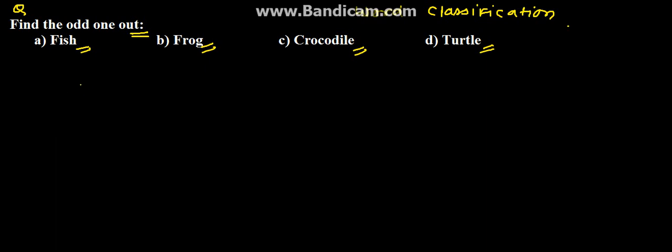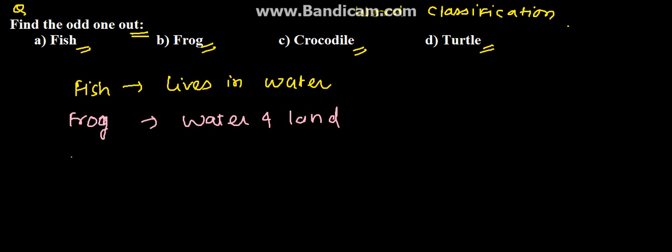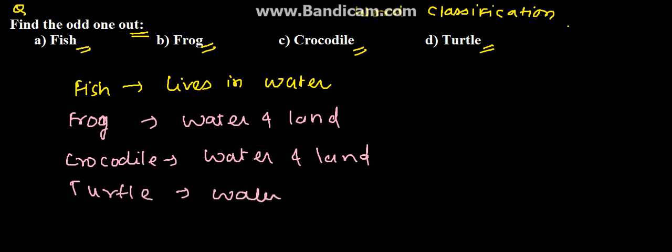Here we can see that fish lives in water, while frog lives in water as well as land. Crocodile lives in water as well as land, and turtle can survive on water as well as land.